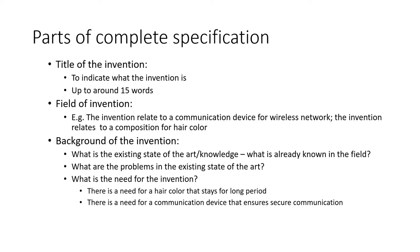The next field is the field of invention, which indicates what technology field the invention relates to. For example, if your invention relates to a communication device used in a wireless network providing secure communication, you can say the field of invention is a communication device for a wireless network. Or if you have made a composition for a hair color that stays on for long periods, you can say the field of invention is a composition of a hair color.